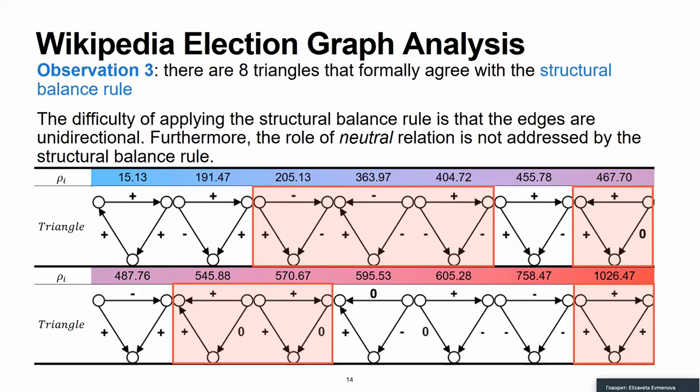To look at the problem from a different side, we consider whether shown triangles agree with the structural balance theory. However, note that the structural balance theory is not actually capable of interpreting the neutral edges. This stems from the fact that a neutral edge can potentially be considered either as a weak positive or a weak negative relation. Within the context of the considered problem, the neutral edge should be interpreted as a weak positive relation. Following this assumption, we see that there are in total eight triangles that formally agree with the structural balance theory.